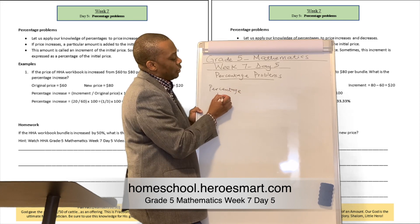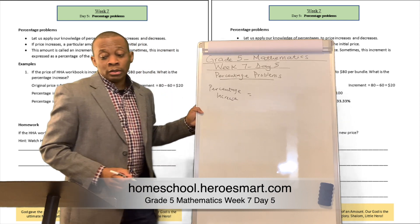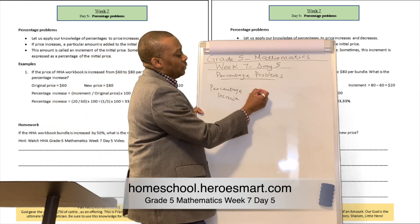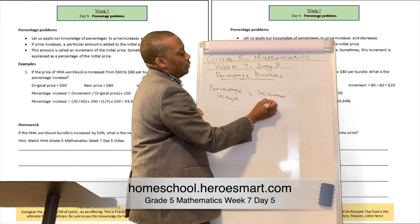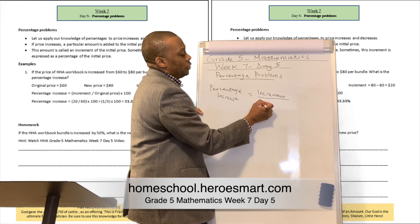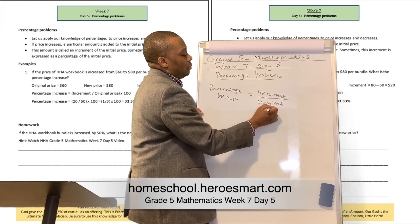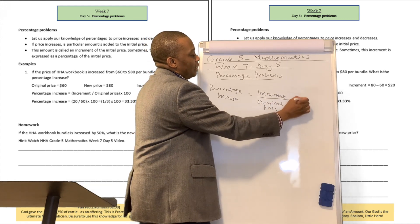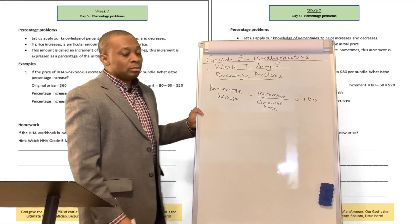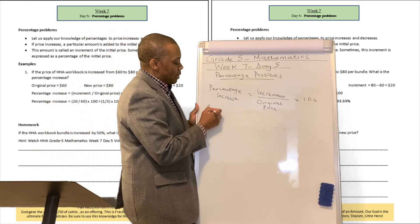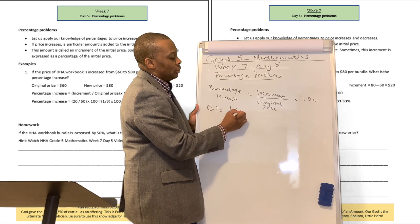Percentage increase will be equivalent to the increment divided by the original price, and then multiply it by 100. All right, so they told us that the original price, which I'm going to call OP, is equivalent to $60.